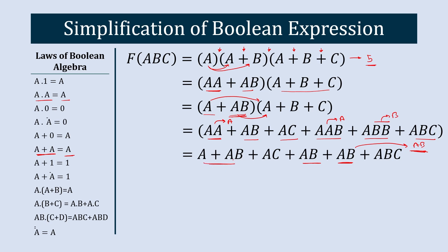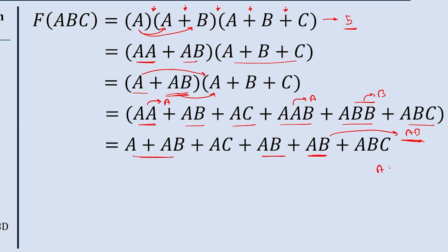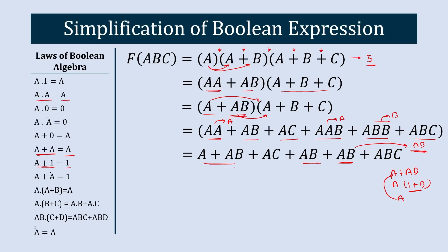A + AB equals A — this is a Boolean law. Here is how: take A common from A + A·B to get A·(1+B). Now 1+B equals 1, because A+1 equals 1, and here B takes the place of A. So A·1 leaves just A. Therefore A + A·B equals A.